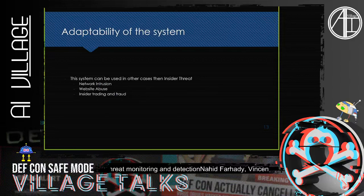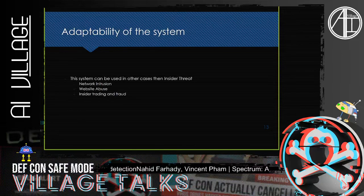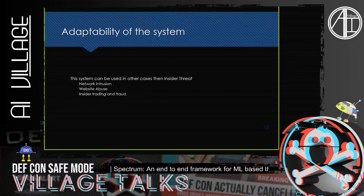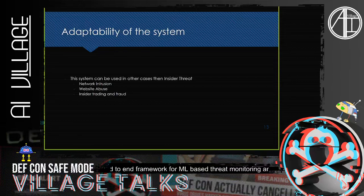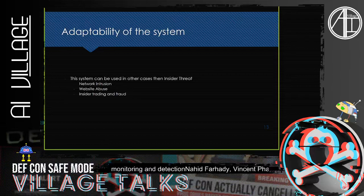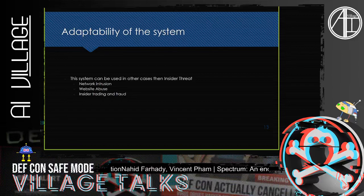This gives us the capability to provide service for multiple customers. The same framework looking at the same data can be used for insider threat detection, but for other customers it can detect network intrusion — of interest to CSOCs — website abuse, or in the case of financial companies, insider trading or employee fraud. As long as the application is monitoring and performing anomaly detection, we can change the data source, modify the dependencies, and extract the results.